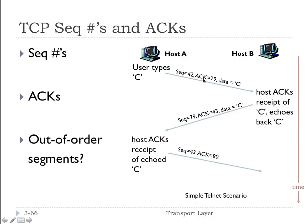The sequence number and acknowledgement number get swapped back and forth depending on who is the sender and who is the receiver in this full duplex communication. Because host B received one additional byte — the letter C — it increases the sequence number by one and uses that as the acknowledgement number when sending back. Host A then acknowledges receipt by sending back an acknowledgement with ACK number 80 and sequence number 43. The sequence number remains 43 because no data was actually sent — it's just an acknowledgement.